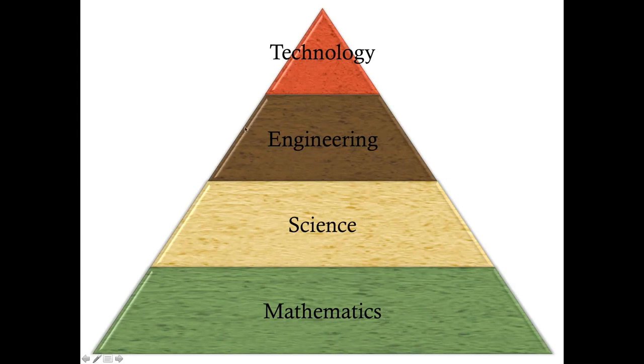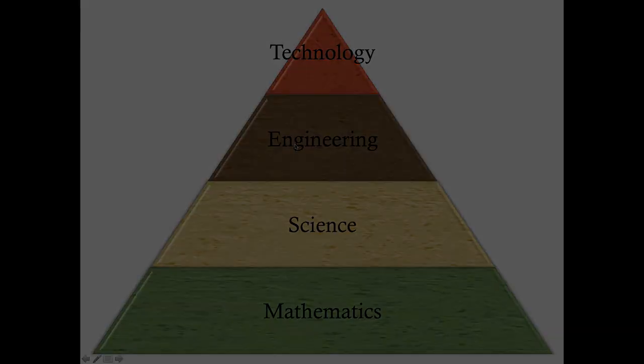Engineering is when you actually design and create something that was not created before. You're making something new, maybe making something better, or building upon previous technology. Technology is the final goal after you engineer something. It's the final product. The reason why you do science, math, and engineering is to get that tool, that technology.